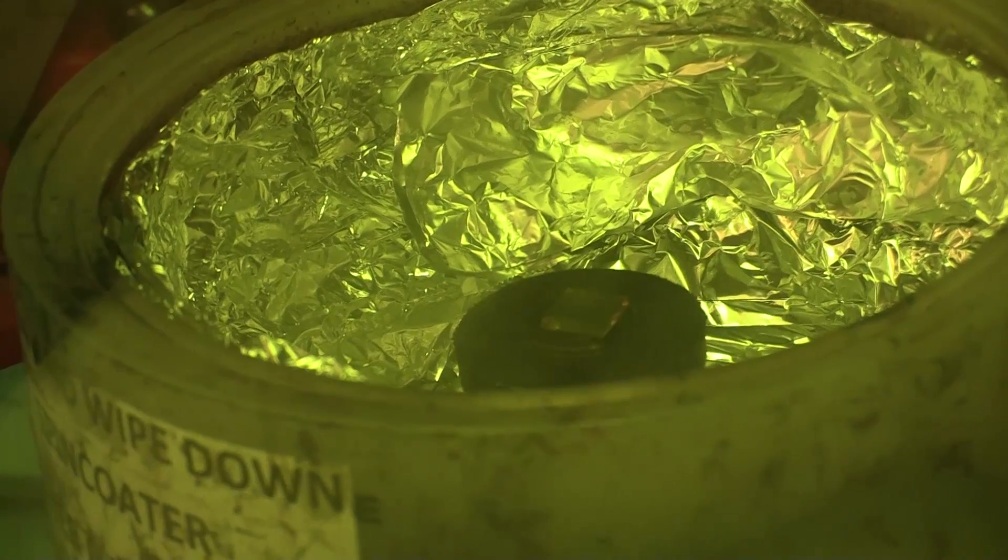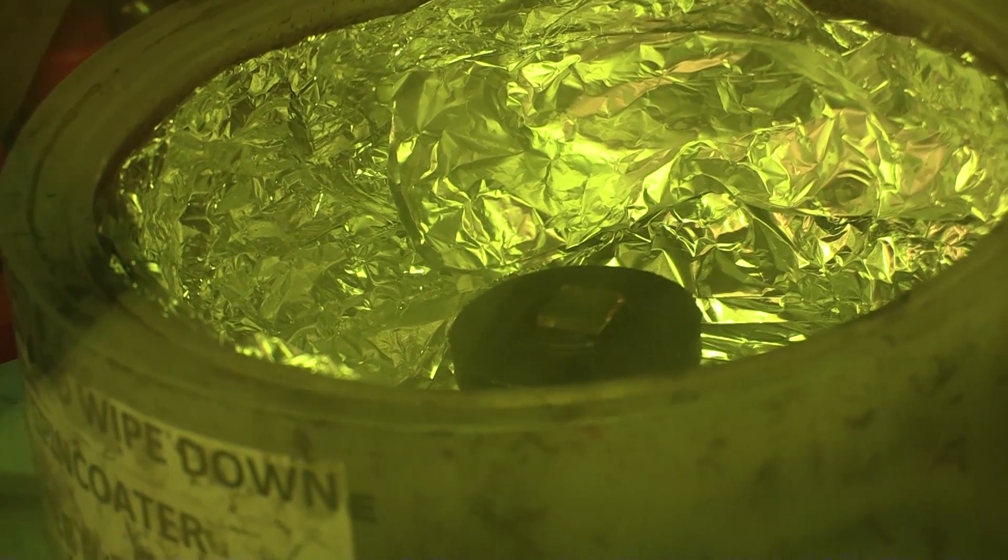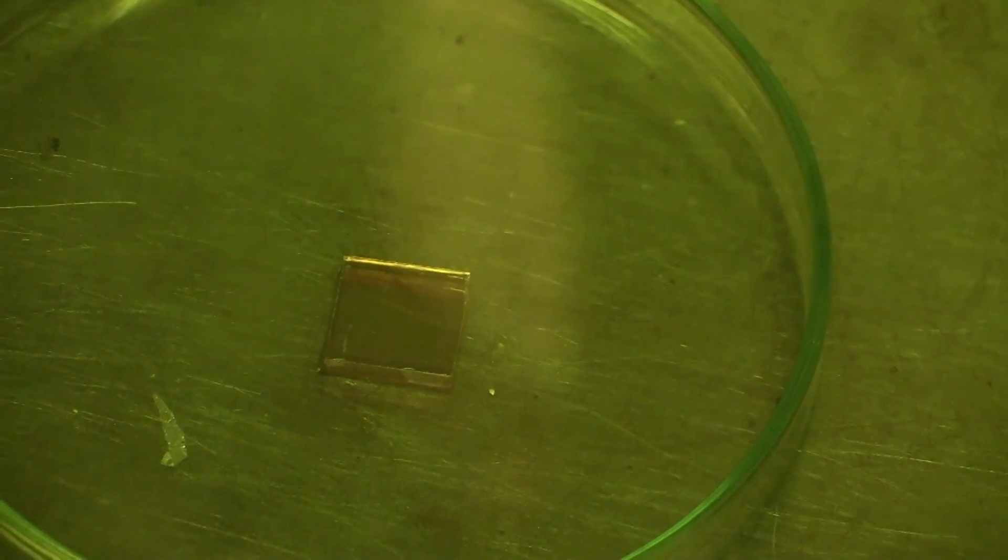We spin coat the solution at 2000 RPM for 45 seconds. Now we let the precursor film dry in the glove box for 15 minutes.